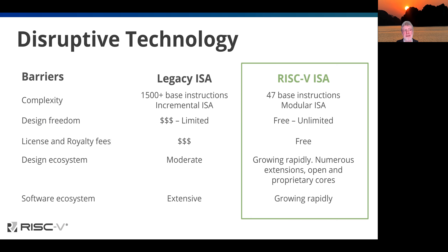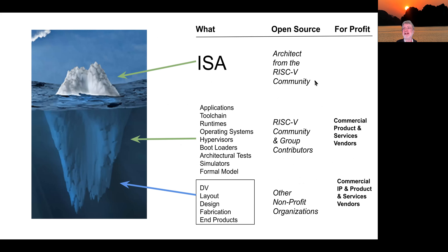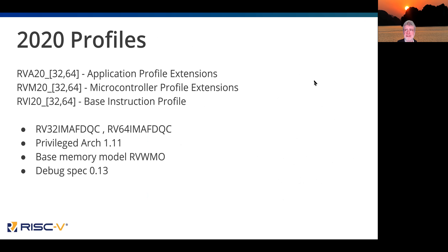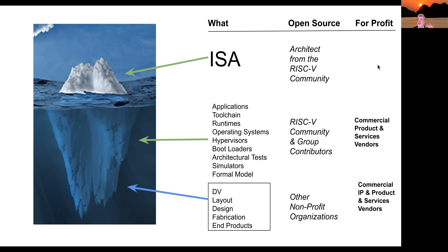Everything is growing rapidly. I like to say that RISC-V is like a glacier. The shiny part you see above the water — that's the ISA. That's done by the architects. It's really heavy-duty work. Most of the folks have been working in other architectures in their lives, and the intelligence and brilliance of these people is just amazing. The stuff underneath the water — the big thing — that's the ecosystem.